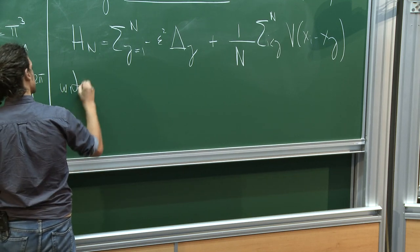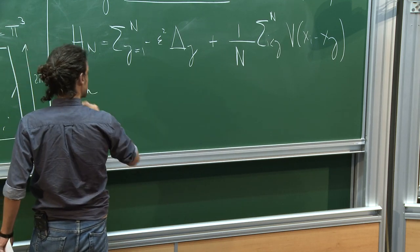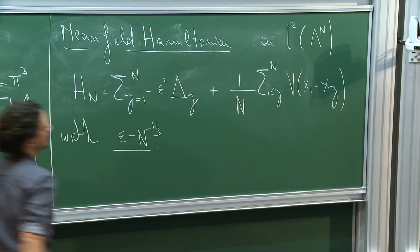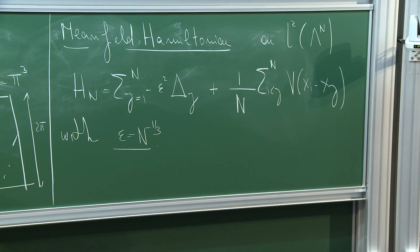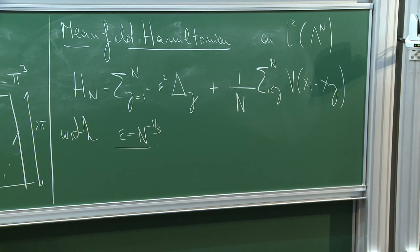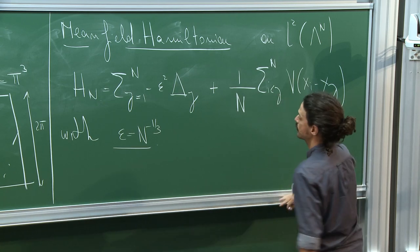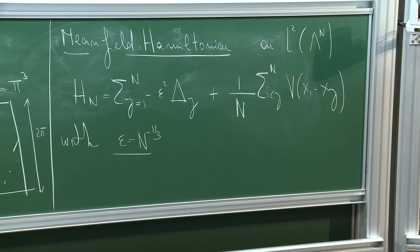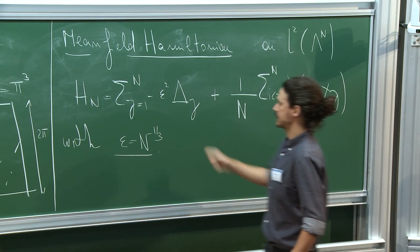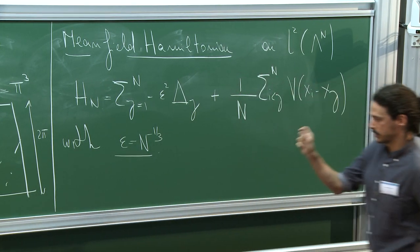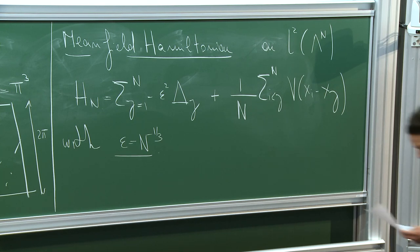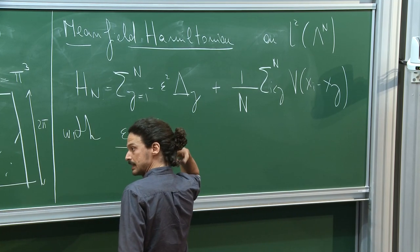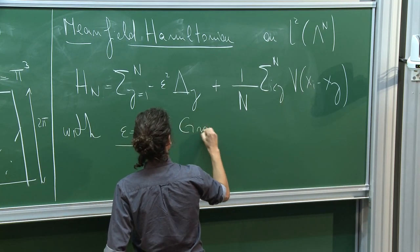The parameter epsilon is N-dependent: it is of order N^{-1/3}. Compared to the classical or bosonic mean field, this semiclassical parameter makes the problem harder because it makes the spacing between eigenvalues of the Laplacian smaller and smaller as N goes to infinity. We are interested in the ground state energy on the fermionic sector.